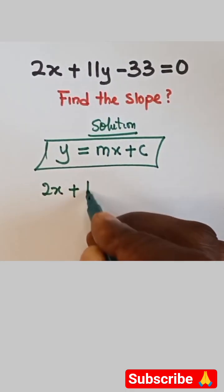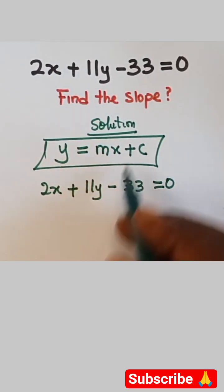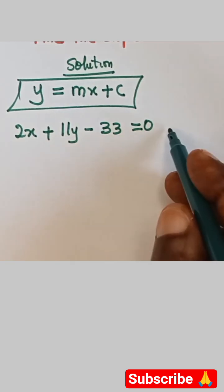So now we have 2x plus 11y minus 33 equals 0. We're going to make this look like this. Now what's the first thing we do? Let's take this 2x and this minus 33 to the other side.